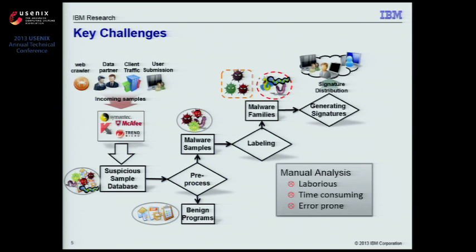According to previous research, the average time window between malware release and detection by AV software is about 54 days, leaving a very dangerous window for malware to propagate and cause damage. Therefore, automatic malware analysis is crucial to keep up with the development of malware programs.